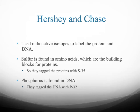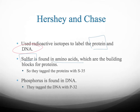In order for Hershey and Chase's experiment to work, they had to use radioactive isotopes to label either the protein or the DNA. Sulfur is found in amino acids, which are the building blocks of proteins, so they tagged proteins with a radioactive isotope called S35. The S represents the element sulfur, and 35 represents the mass — heavier than the average mass for sulfur. Because it's heavier, it has more neutrons, so it's unstable and gives off energy in the form of radiation, which can be used to identify different molecules and even expose film to get pictures.